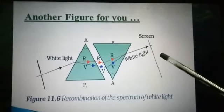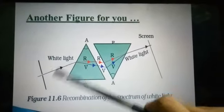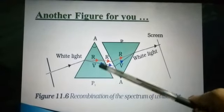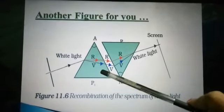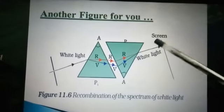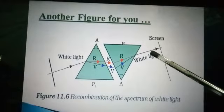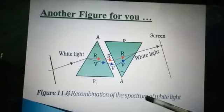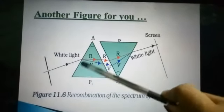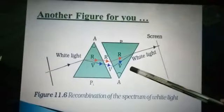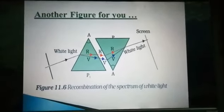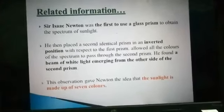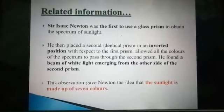When you allow white light to fall on a prism it breaks into seven colors, and again when you allow all seven colors to fall on another inverted prism, you get a combination of all those seven colors — this is recombination of the spectrum of white light. Here is splitting and here is recombining. This experiment with erect and inverted prisms was given by Sir Isaac Newton.